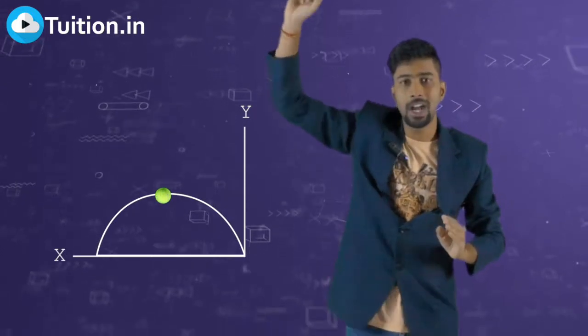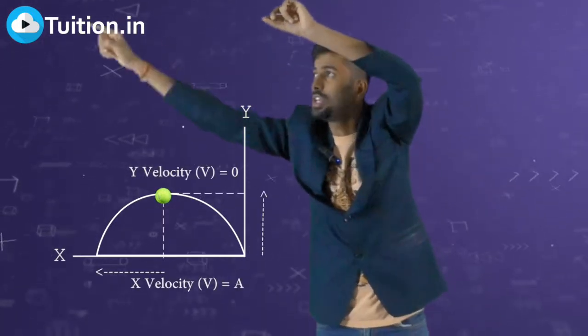After it stops here at the topmost point, its Y velocity has become zero and it only has an X velocity.